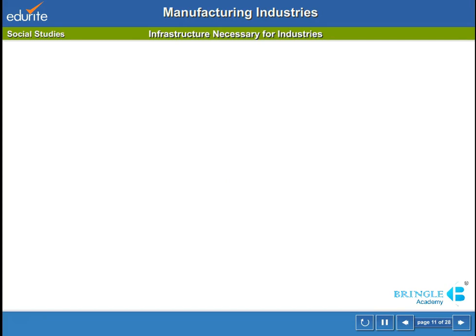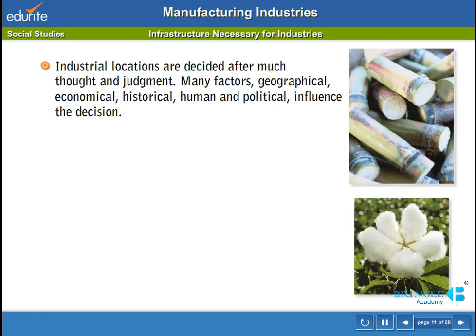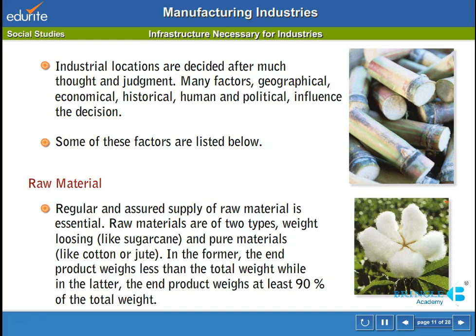Infrastructure necessary for industries: industrial locations are decided after much thought and judgment. Many factors — geographical, economical, historical, human and political — influence the decision. Regular and assured supply of raw material is essential. Raw materials are of two types: weight-losing, like sugar cane, and pure materials, like cotton or jute. In the former, the end product weighs less than the total weight, while in the latter, the end product weighs at least 90% of the total weight.